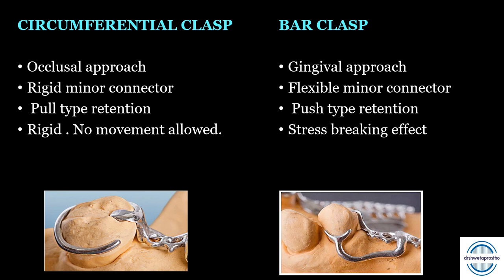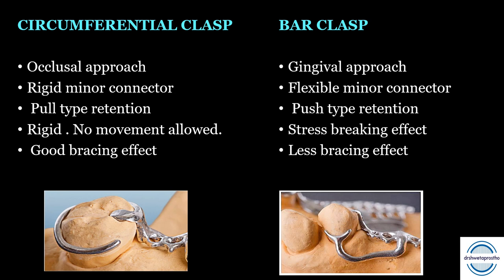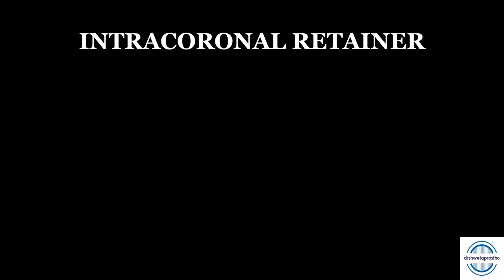The bar clasp allows a certain degree of functional movement of the distal extension base, dissipating stresses and lessening the load on the distal abutment — hence used for distal extension cases. Circumferential clasp gives good continuous bracing (more than 180 degrees), while bar clasp gives less bracing (discontinuous, three-point), so stability against lateral forces is also less. Circumferential clasp shows more metal, making it less aesthetic; the bar clasp is more aesthetic.